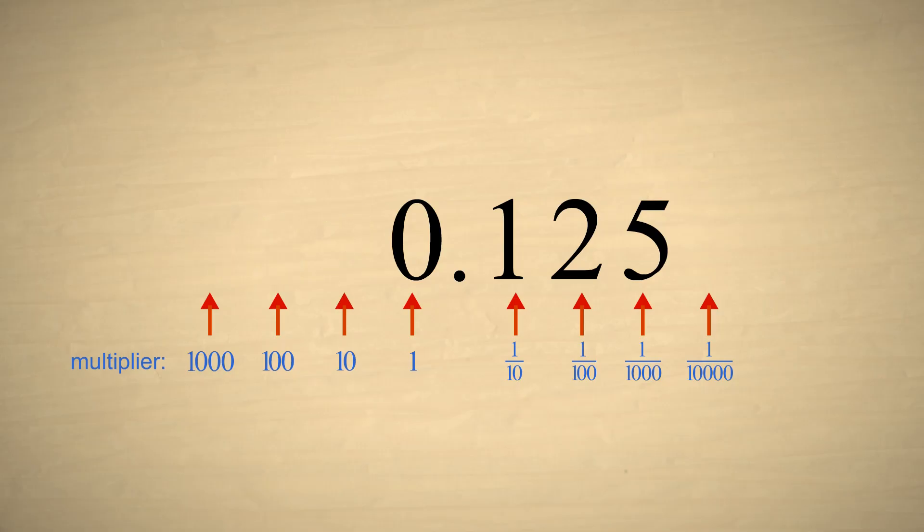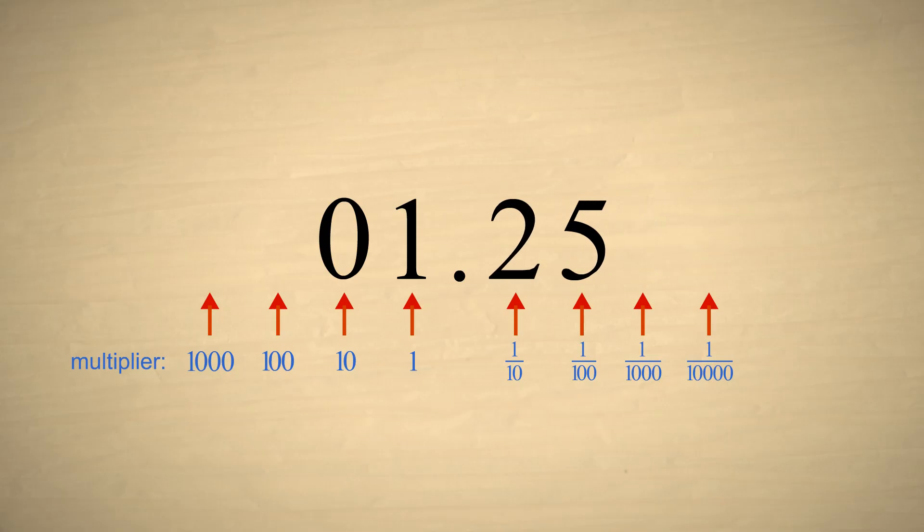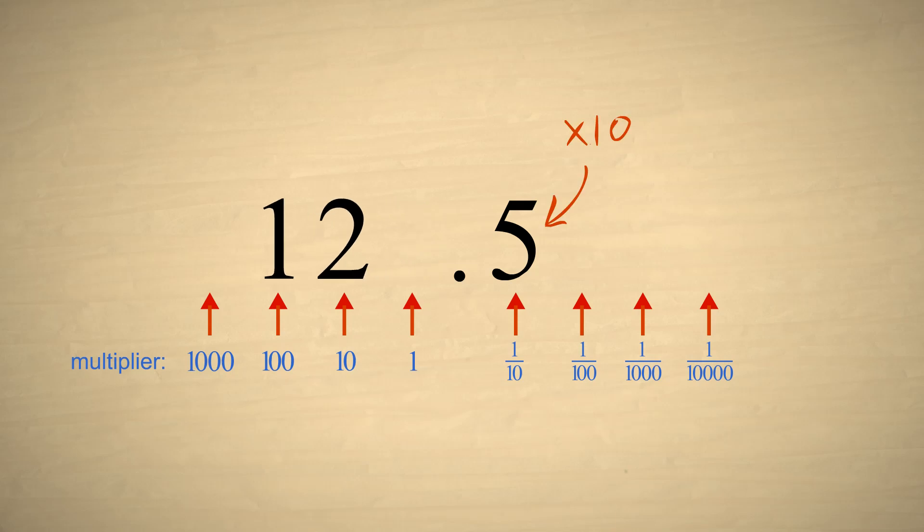If we multiply this number by ten, each digit is shifted one column to the left. If we multiply by ten again, each digit is shifted one more column to the left. And if we multiply by ten a third time, there will be no more digits to the right of the decimal point. We will have an integer.